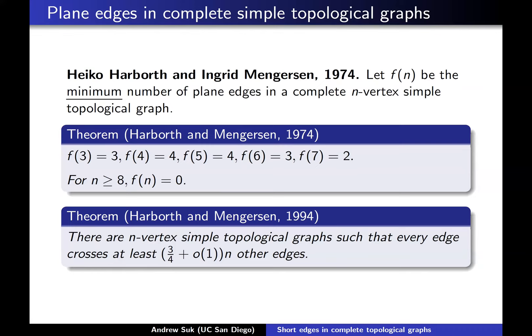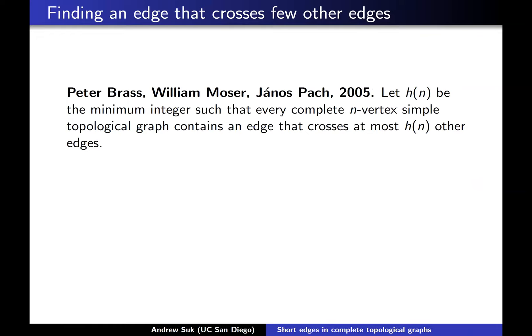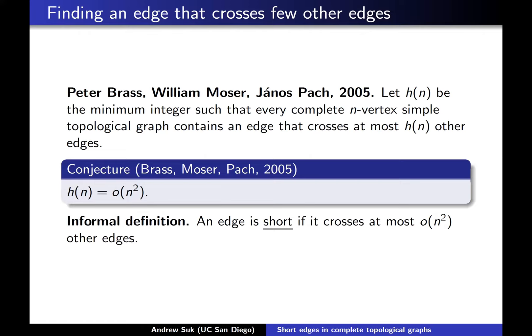This conjecture was more formalized in a book by Brass, Moser, and Pach from 2005. They defined h(n) to be the minimum number such that every complete n-vertex simple topological graph has some special edge that crosses at most h(n) other edges. What they conjectured is that you should be able to find a special edge that crosses far less than average — more exactly, little-o(n²) other edges. This is where I came up with my informal definition of 'short': an edge is short if it crosses little-o(n²) other edges. So Brass, Moser, and Pach conjectured that short edges always exist in complete n-vertex simple topological graphs.